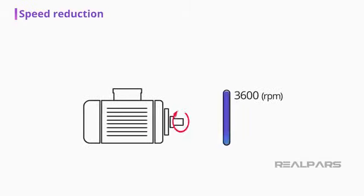However, if an application does not require an electric motor running at full speed of 3600 RPM, which is very common, a few solutions exist.